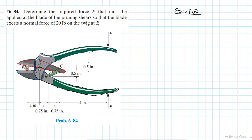We've been told that the twig at E is experiencing 20 pounds from the shearing blades, and we've been asked to find the value of P — the applied force — which is where you apply the force using your hand.